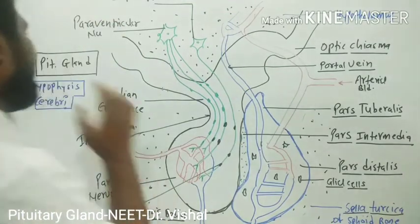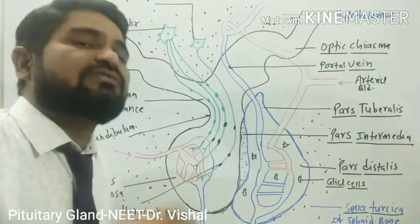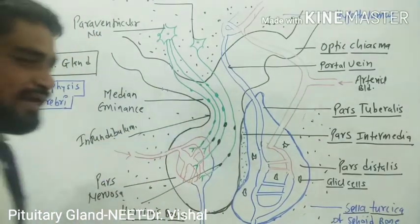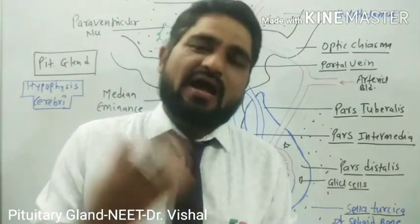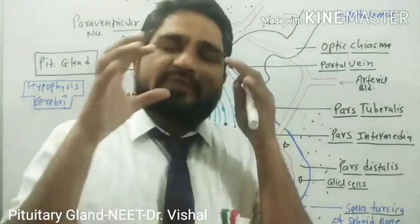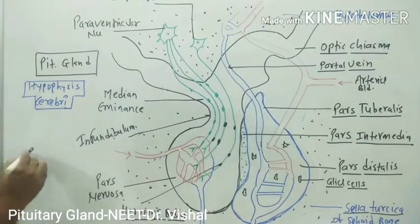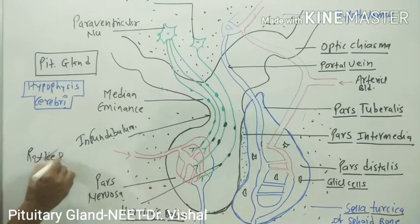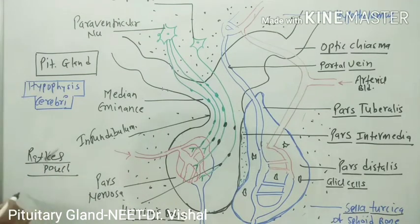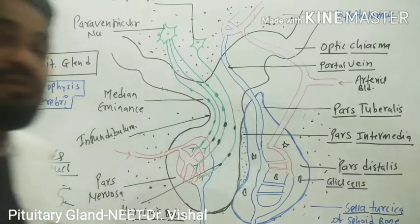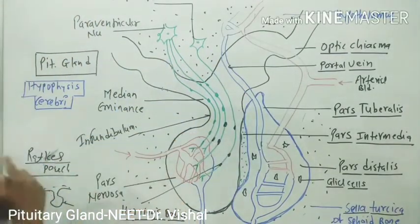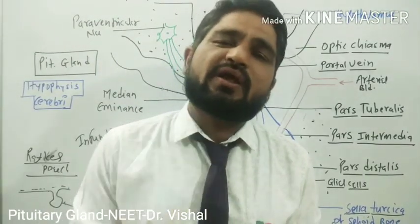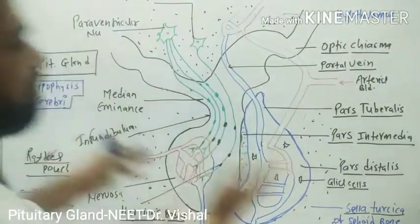The pituitary is also called hypophysis cerebri and is the master endocrine gland because it controls other endocrine glands. Development-wise, it has a dual origin — derived from both embryonic ectoderm and mesoderm. The anterior pituitary develops from a pouch called Rathke's pouch, which develops from the pharyngeal epithelium. Weight-wise, it is one of the smallest endocrine glands, weighing around one gram — a peanut-shaped gland perfectly placed in the sella turcica of the sphenoid bone.